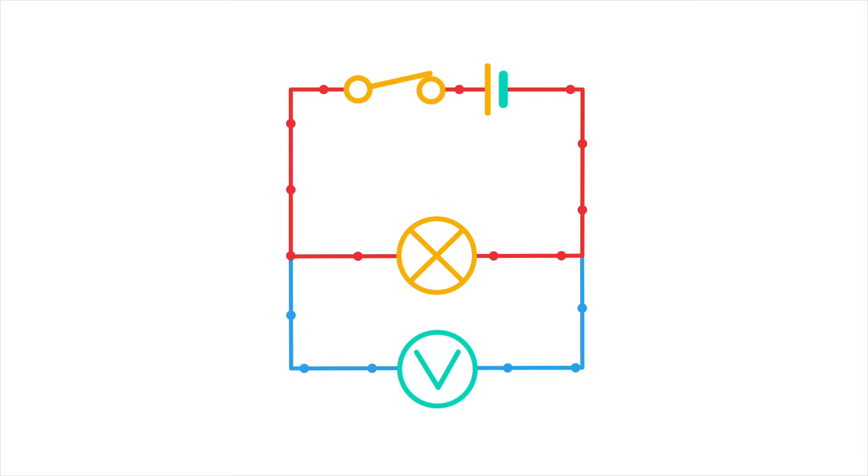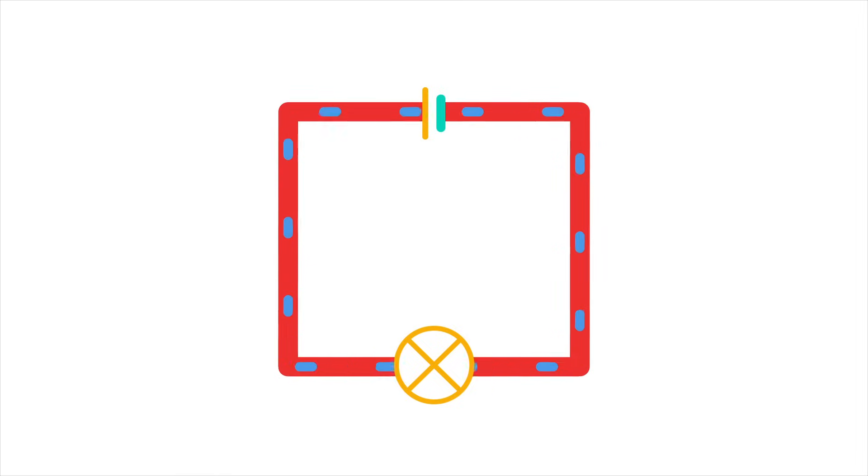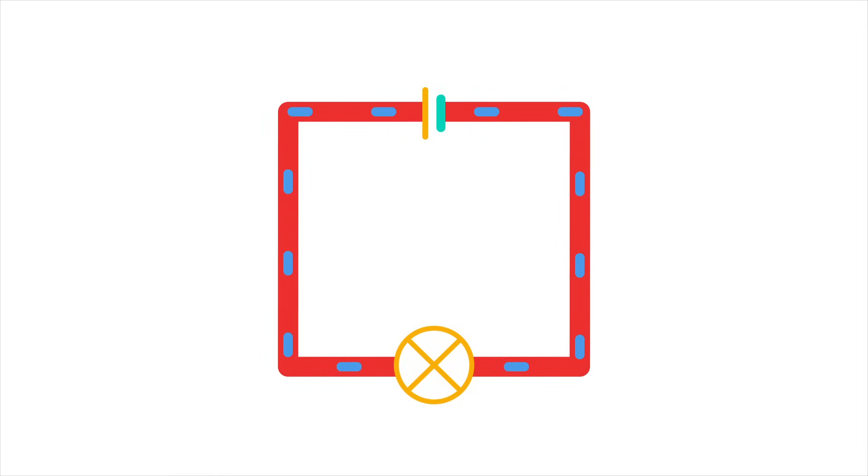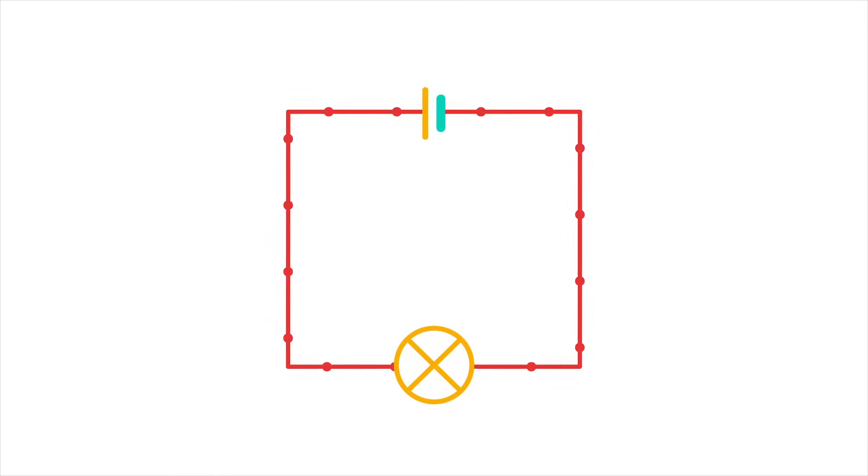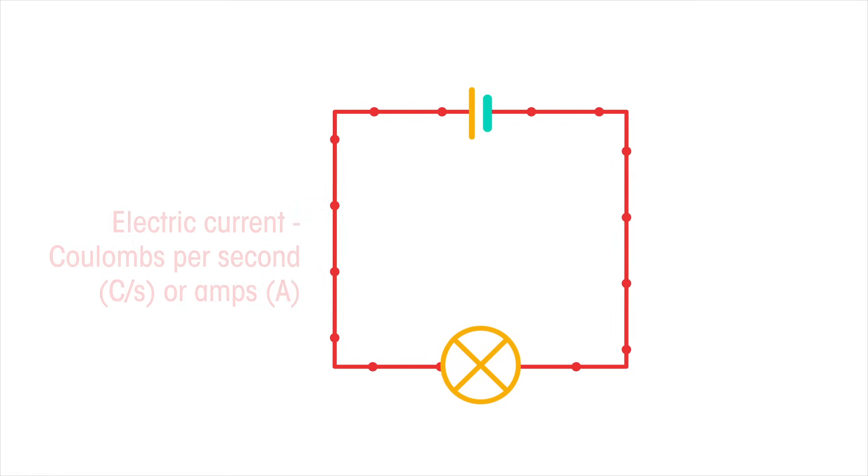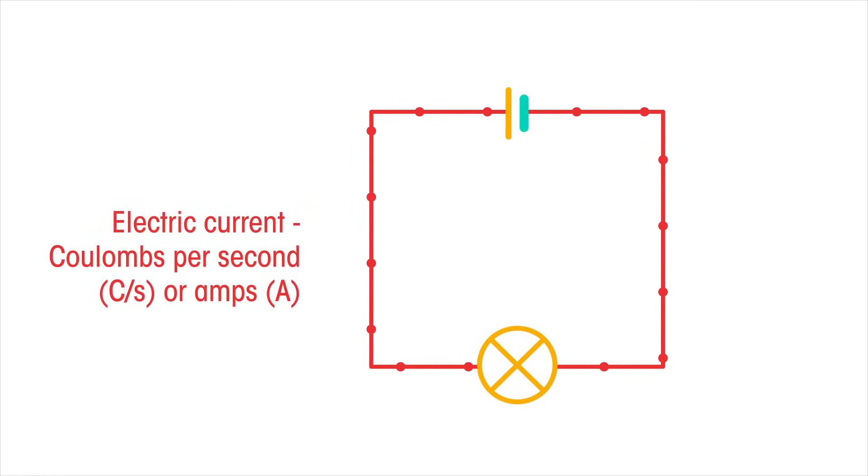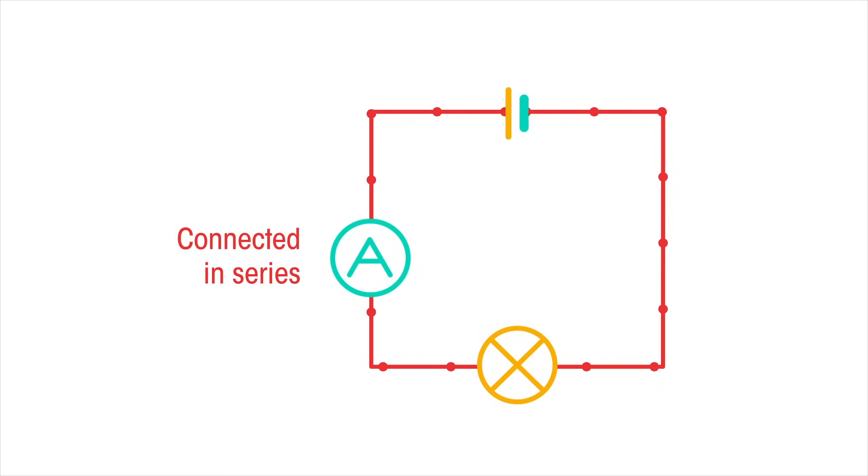We can also measure the current flowing through a circuit. In a wire, the current is the flow of negatively charged electrons. We can imagine it being like water flowing in a pipe, but instead of water, it's a flow of electric charge, which we measure in coulombs. So electric current is coulombs per second, or amps, measured using an ammeter which must be connected in series.